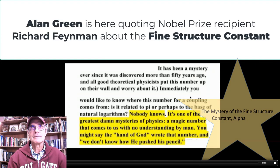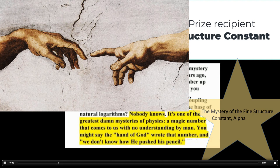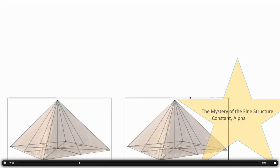Immediately you would like to know where this number for a coupling comes from. Is it related to pi, or perhaps to the base of natural logarithms? Nobody knows. It's one of the great damn mysteries of physics — a magic number that comes to us with no understanding by man. You might say the hand of God wrote that number, and we don't know how he put it.